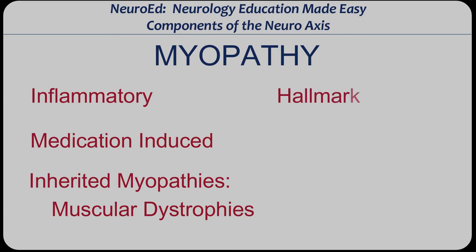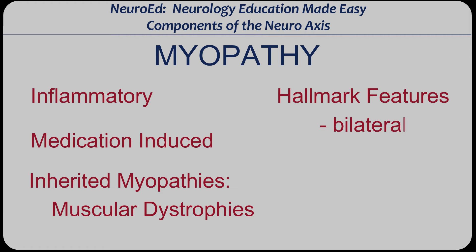What are the hallmark features of a myopathy — features that can't really be caused by anything else? If you just say weakness, well, a stroke can cause weakness, a neuropathy can cause weakness, not just a myopathy. If you say bilateral, so could a spinal cord lesion or a neuropathy. Pause this video, think about that, and resume. The hallmark signs and symptoms of a myopathy are bilateral, proximal, symmetrical weakness.